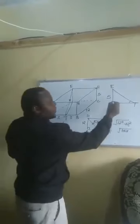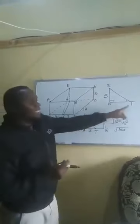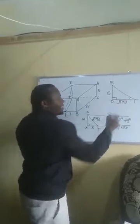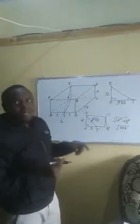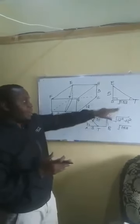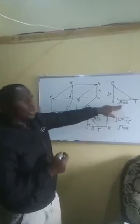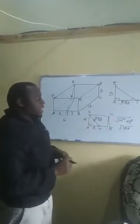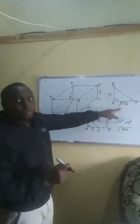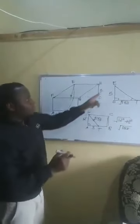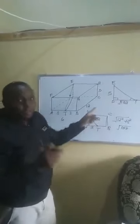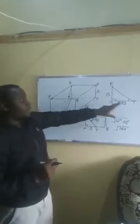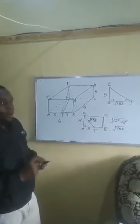In our right-angled triangle, DT is now √153. Avoid using rounded-off values in intermediate calculations — use the exact value √153. Now we have two lines already, which means we can get the angle ETD. The most important thing here is coming up with the correct triangle.